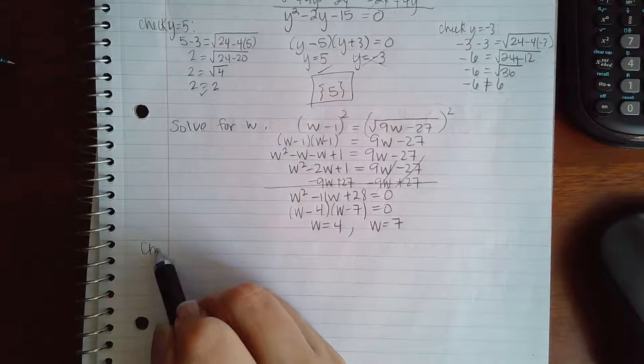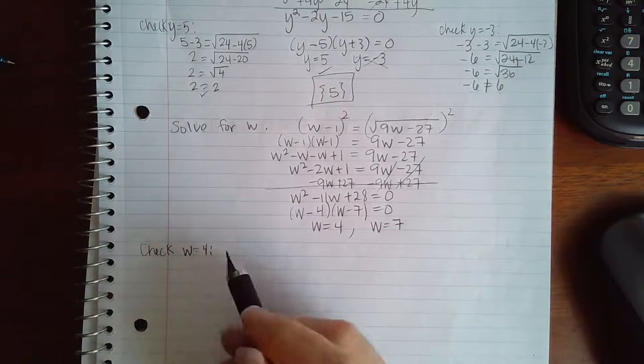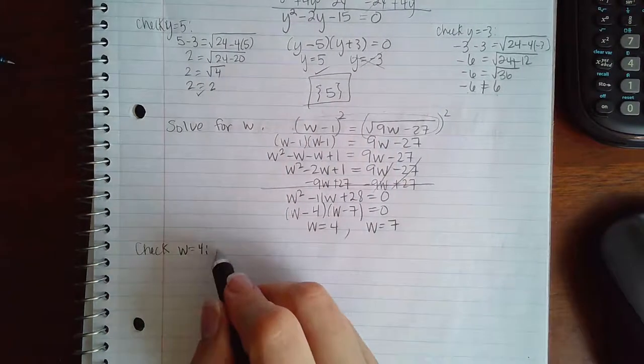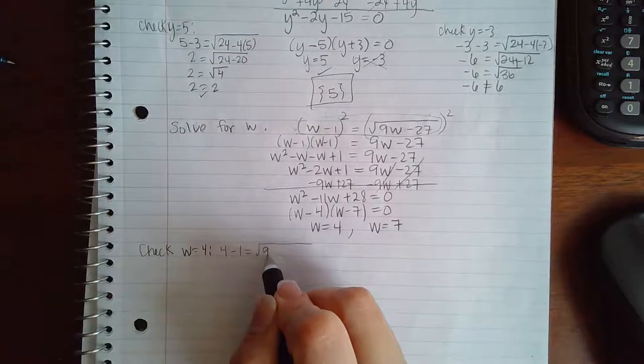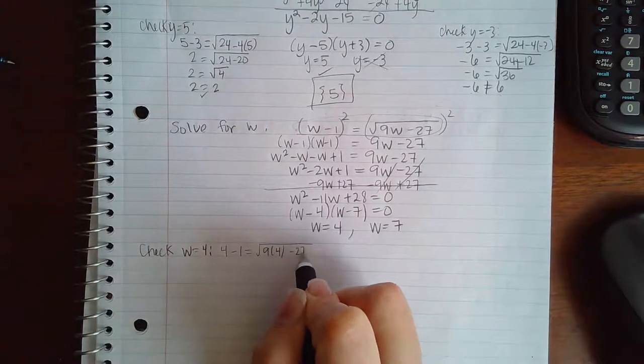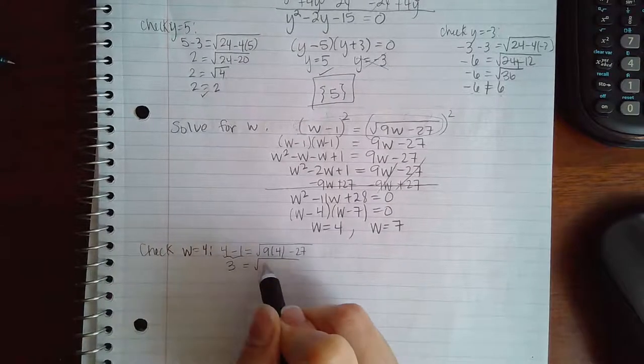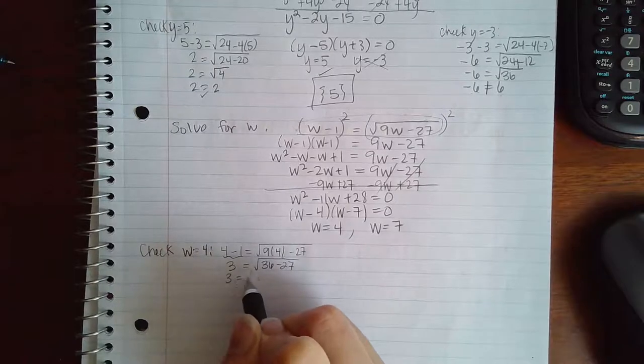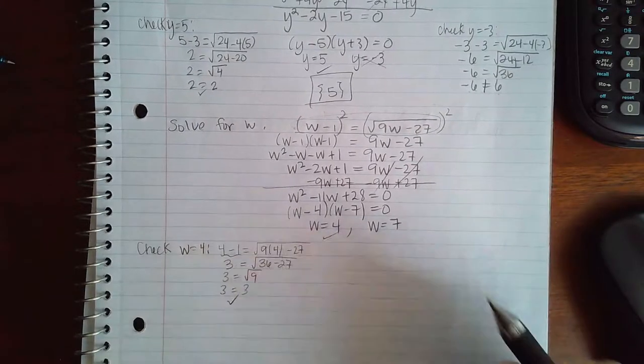So checking w equal to 4, plug it into the original problem. So 4 minus 1 equals 9 times 4 minus 27. So this side is a 3. And then I get 36 minus 27, which is 9. Square root of 9 is 3. So this answer checks out.